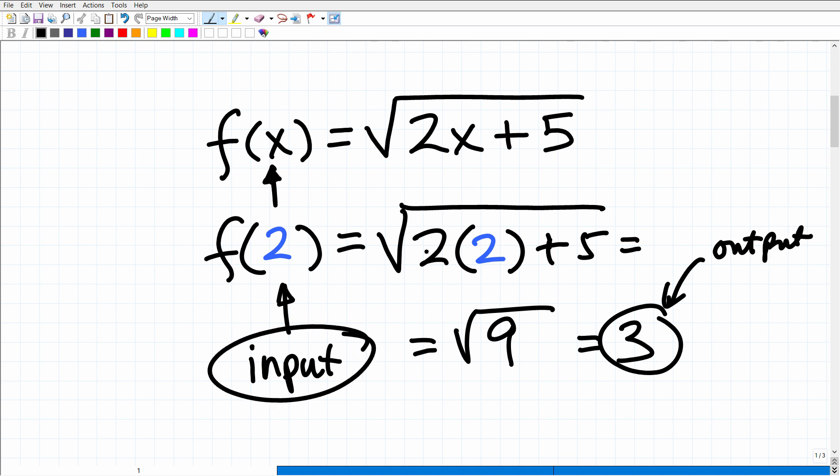Now, because we're able to get an output value here, 2 would be part of the domain, okay? So the domain of a function is the set of all input values. So what numbers are we allowed to plug into a function?